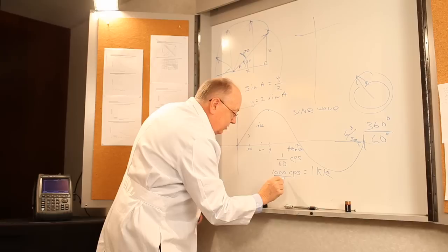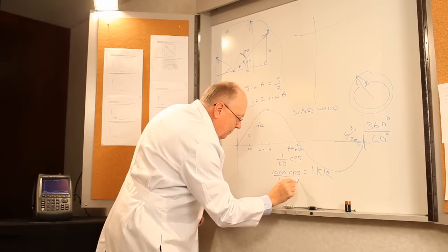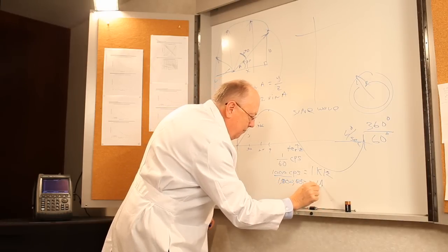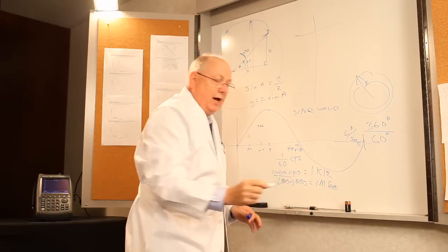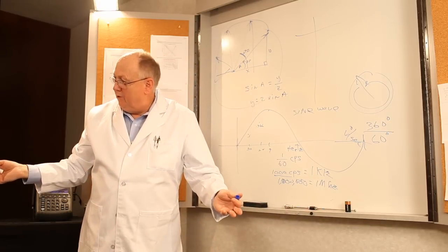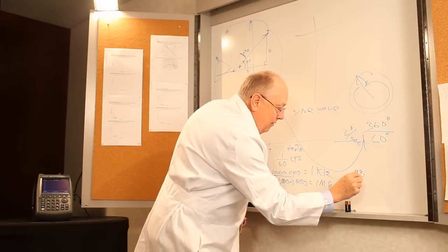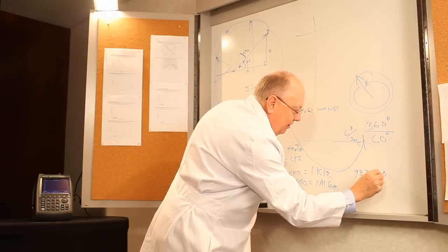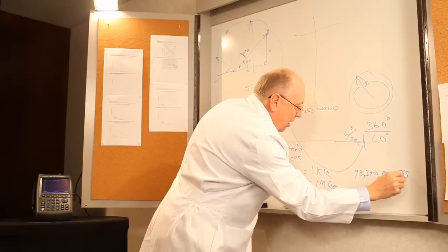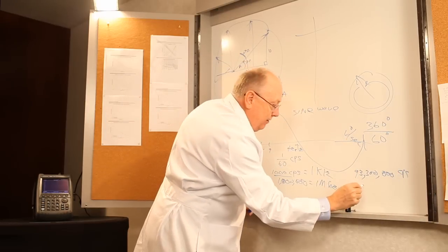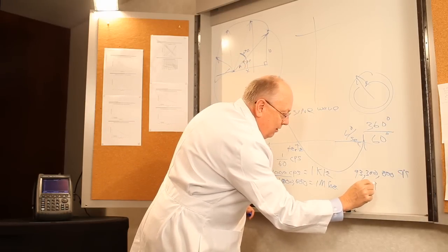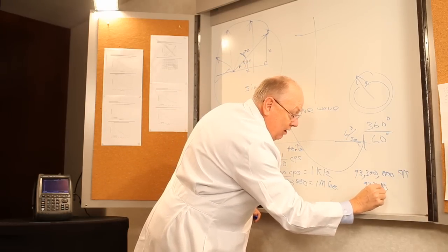1,000 cycles per second is 1 kilohertz. 1,000,000 cycles per second equals 1 megahertz. And that's why I said Mix 93.3 on your radio dial, FM dial, is 93,300,000 cycles of the sine wave per second, or 93.3 megahertz.